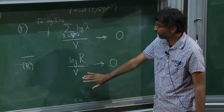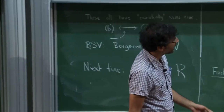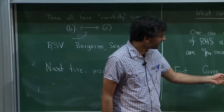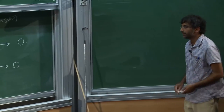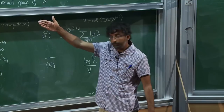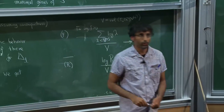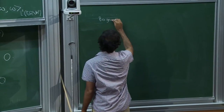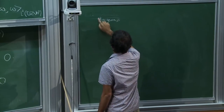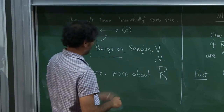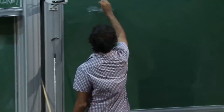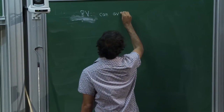What Bergeron and I observed is that in a closely related context we can completely sidestep both of these issues at the same time and get unconditional results. We have to change the problem slightly — change the weight — and then we really get the analog of this conjecture and obtain unconditional results.